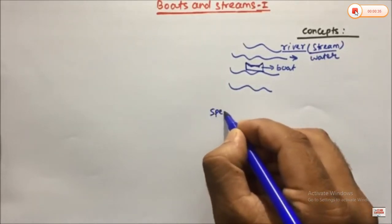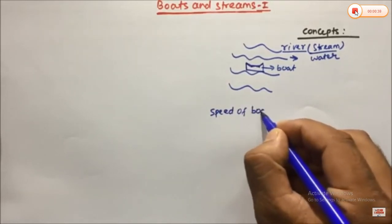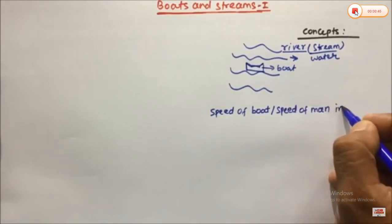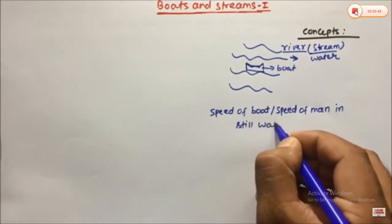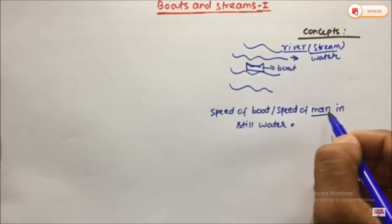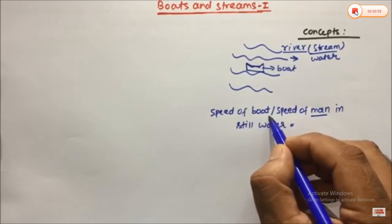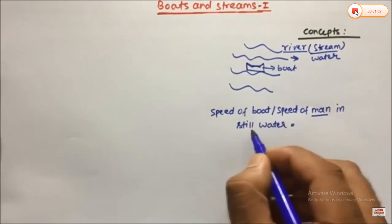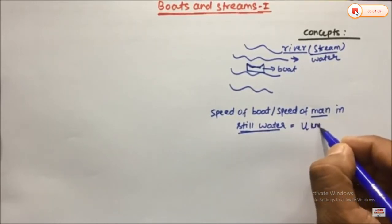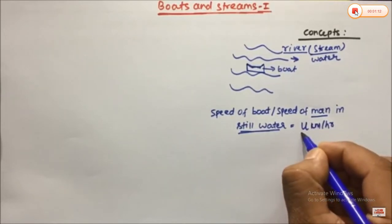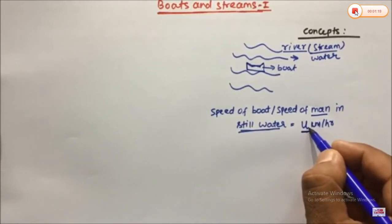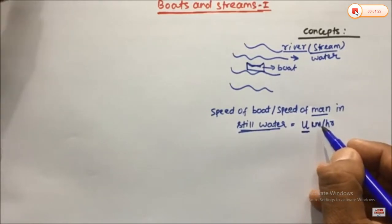The first term is speed of boat, or speed of man in still water. The boat and man speed are the same because the man is sitting inside the boat. Speed of boat or speed of man in still water means when the water is not moving. We denote this as U kilometers per hour — this is the standard notation used in RS Agarwal and many other books, though you can also use X or Y.